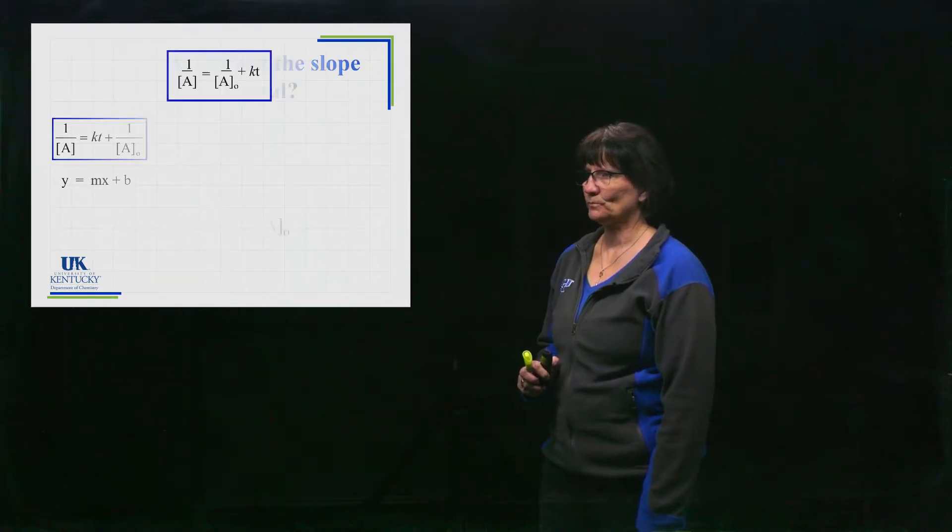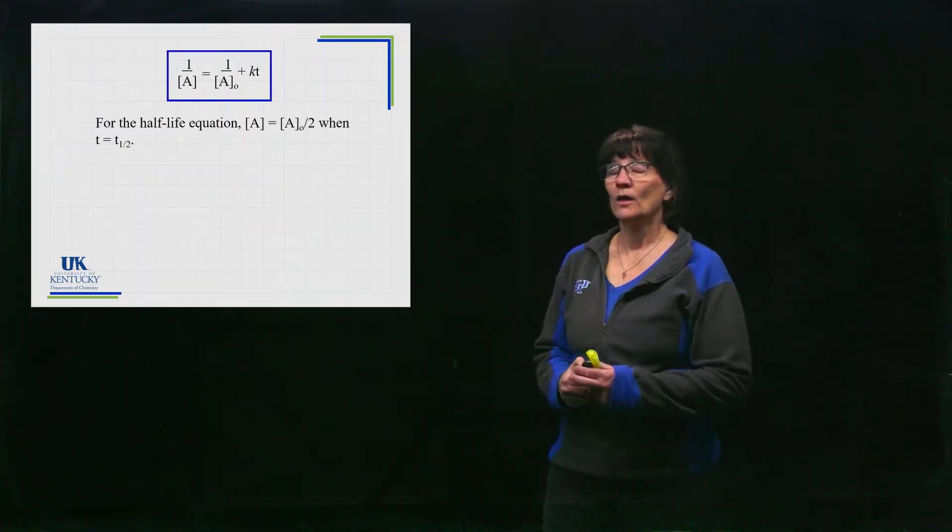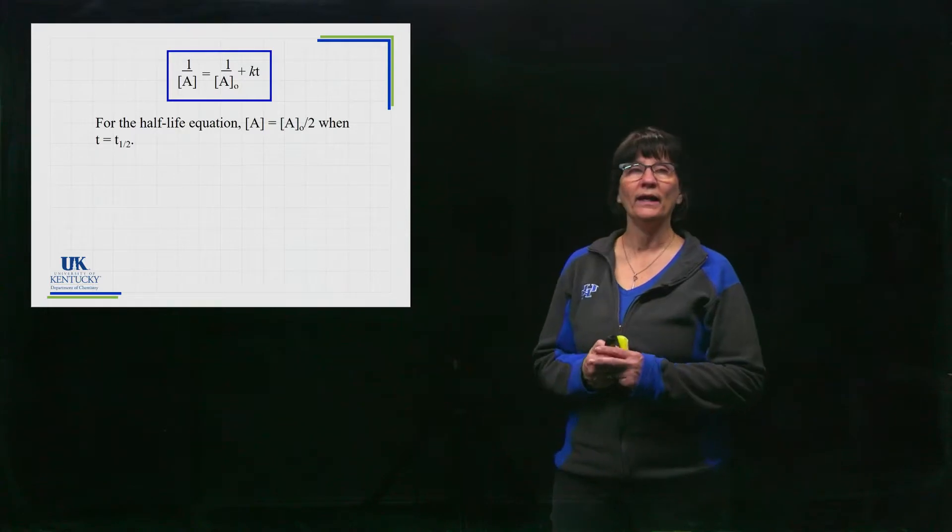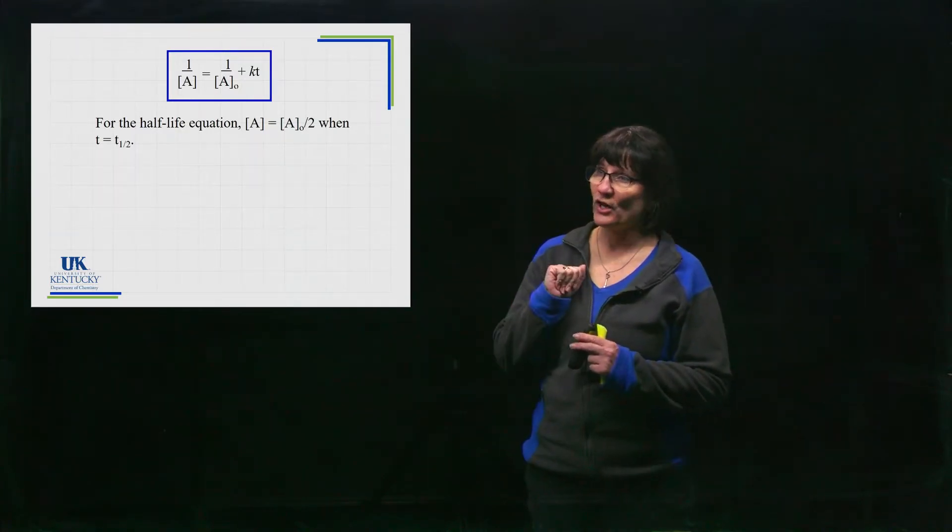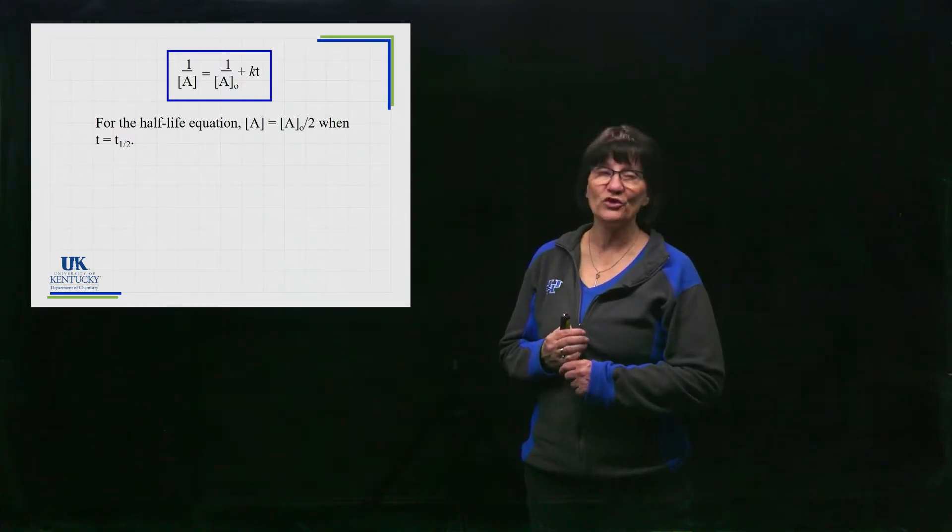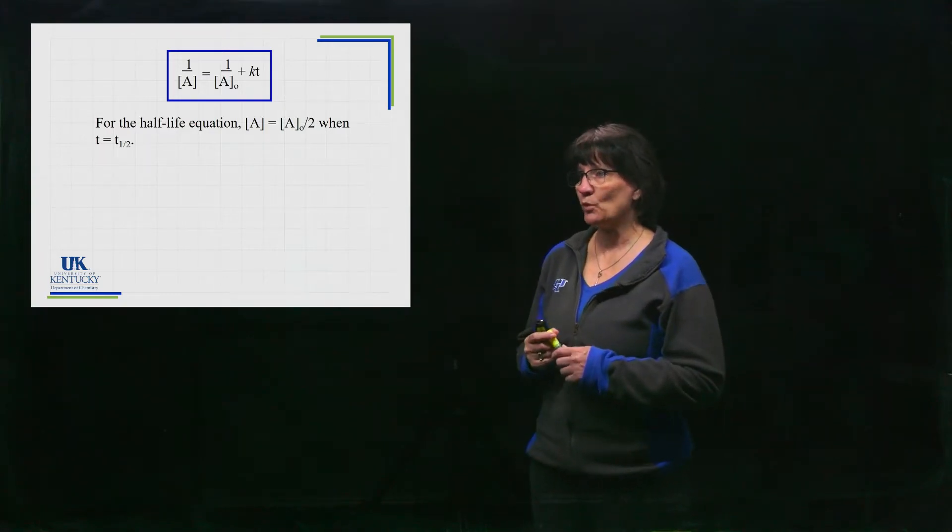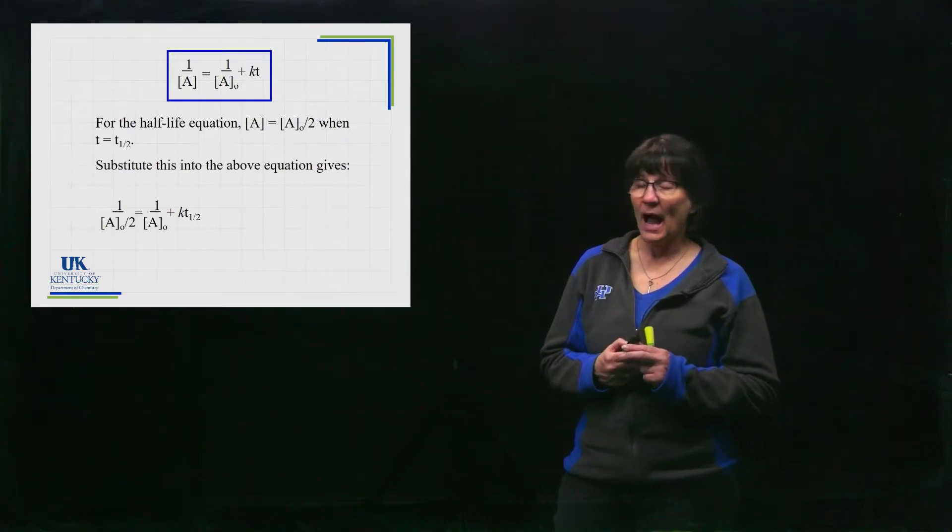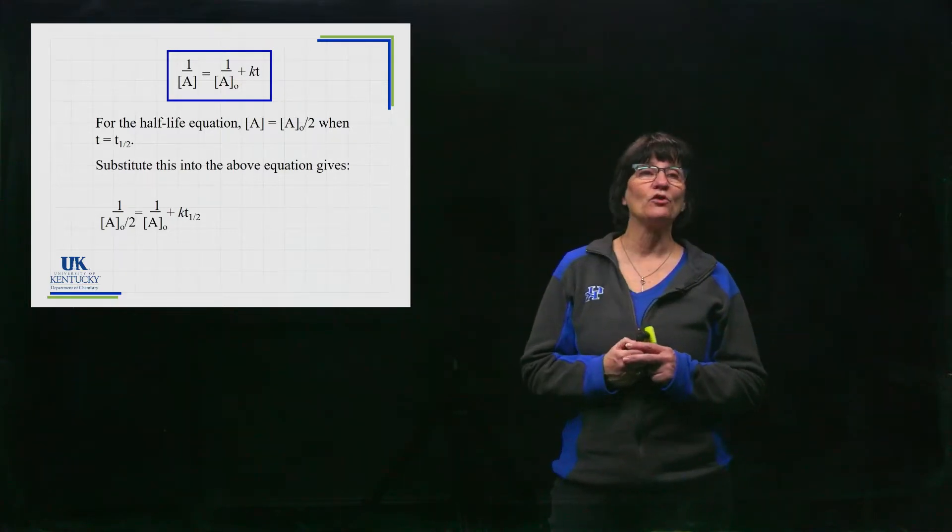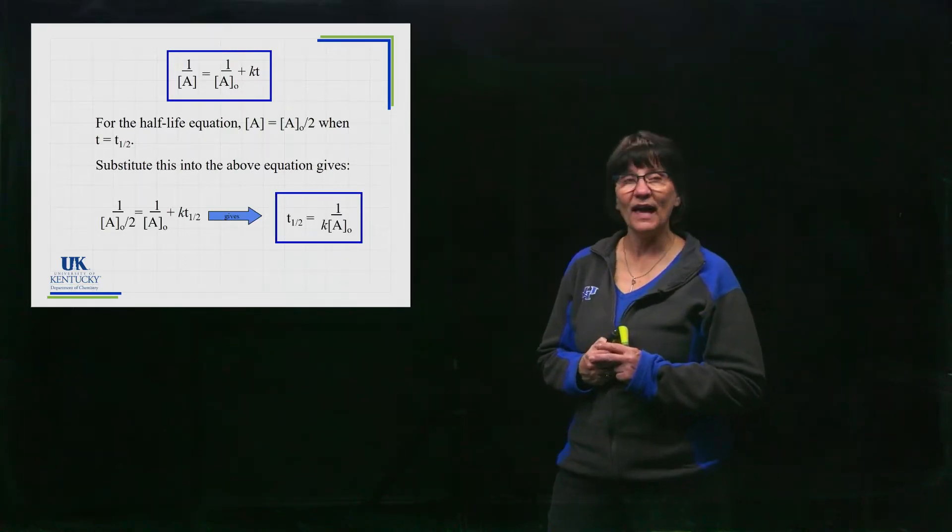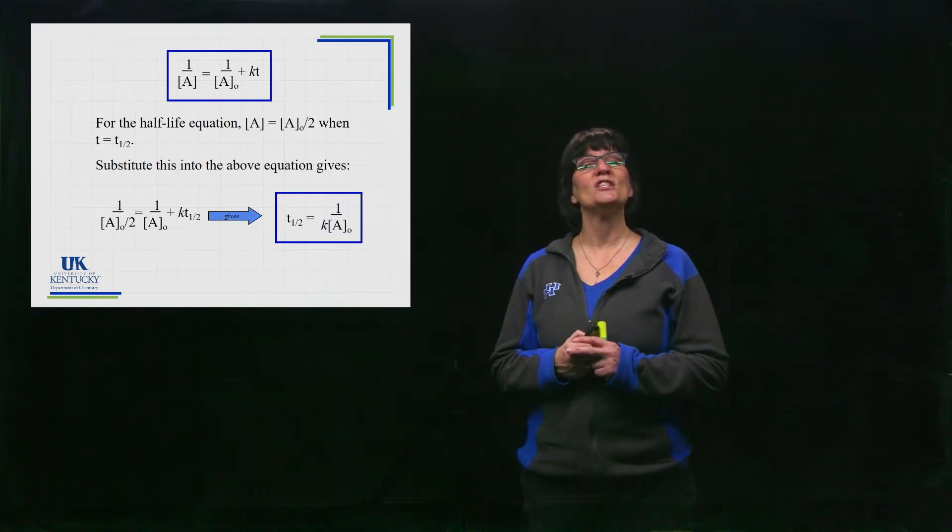So let's do similar work that we did with first-order kinetics with our half-life. Half-life is the time when your concentration is half your initial concentration. So we'll go up to that original equation up there and where you see just the [A], we're going to replace it with [A]₀ divided by 2. I've just done the substitution there. I'm going to combine the [A]₀ terms and I'm going to solve for the half-life, and that's going to give me this half-life equation here.